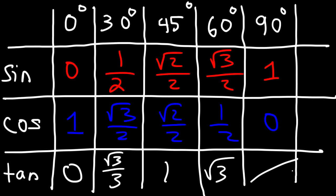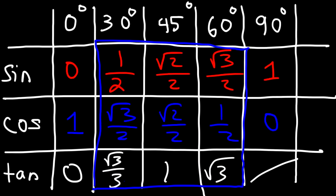Now, is there a way to remember basically all of these values? It turns out that you could use a special reference triangle to get any one of those values for 30, 45, and 60 degrees. Let's start with the 30-60-90 right triangle.